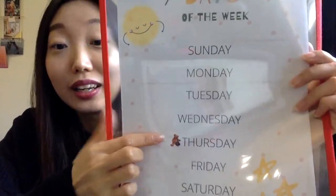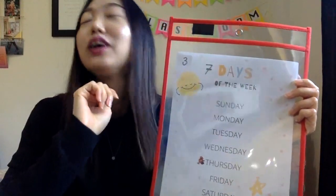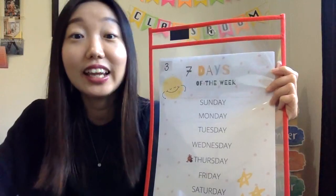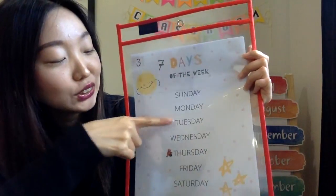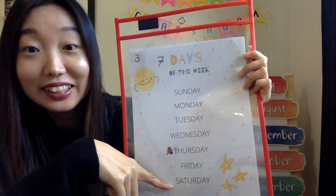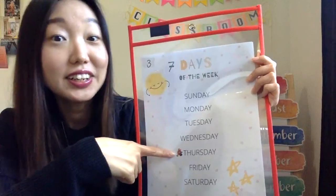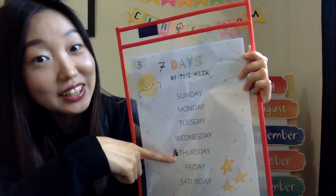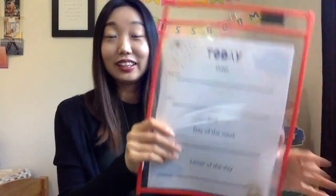We're gonna put the last sticker beside Thursday — yes, that's today! Great job. Let's sing the seven days of the week song together. One, two, three, go — there are seven days, there are seven days, there are seven days in a week. Sunday, Monday, Tuesday, Wednesday, Thursday, Friday, Saturday. Today's Thursday, today's Thursday, today's Thursday all day long!